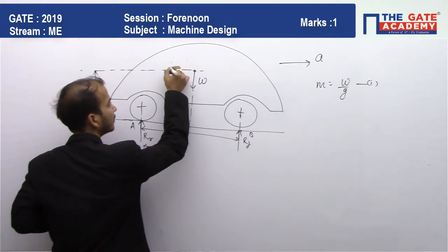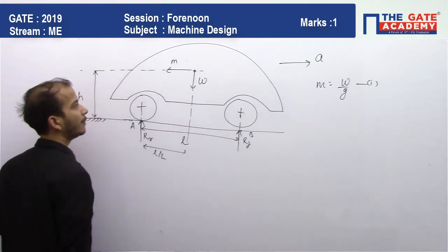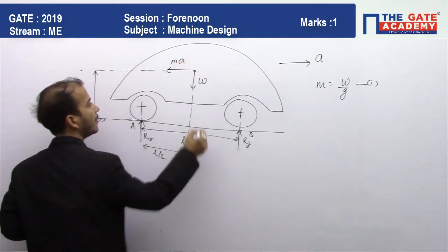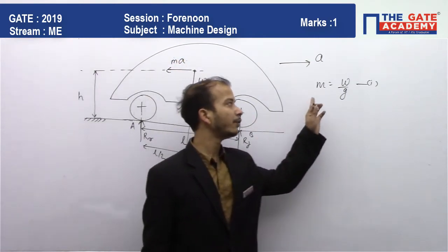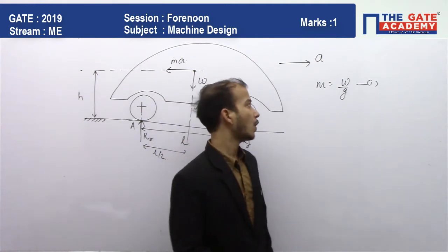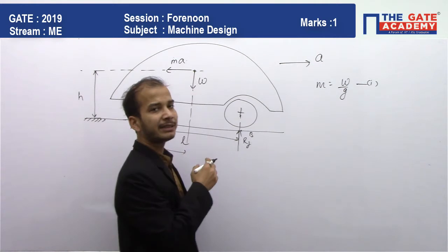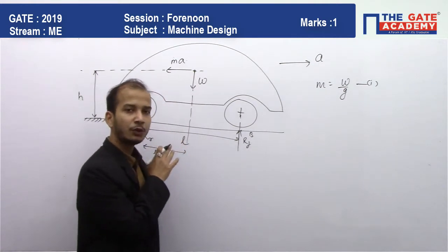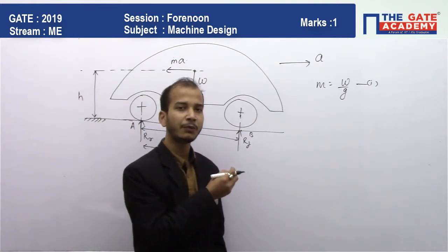Here, mass of the body times acceleration. So the first equation: because mass terms are not asked, we will use the equilibrium equation.